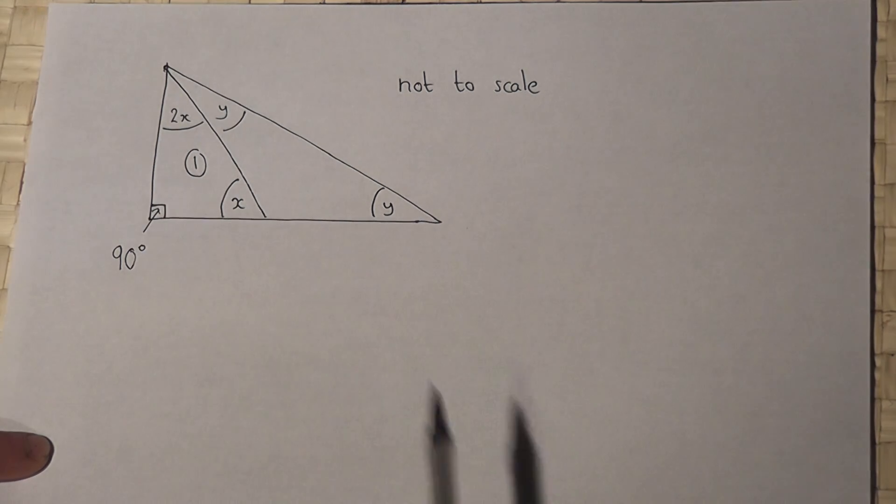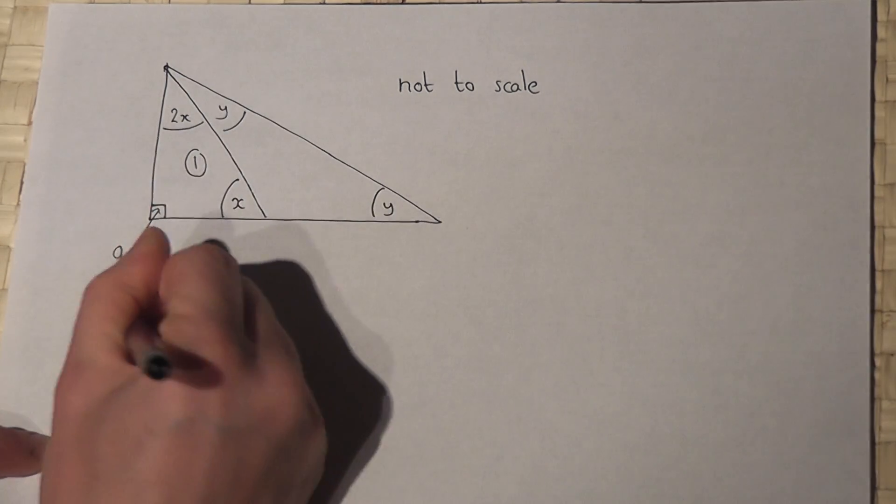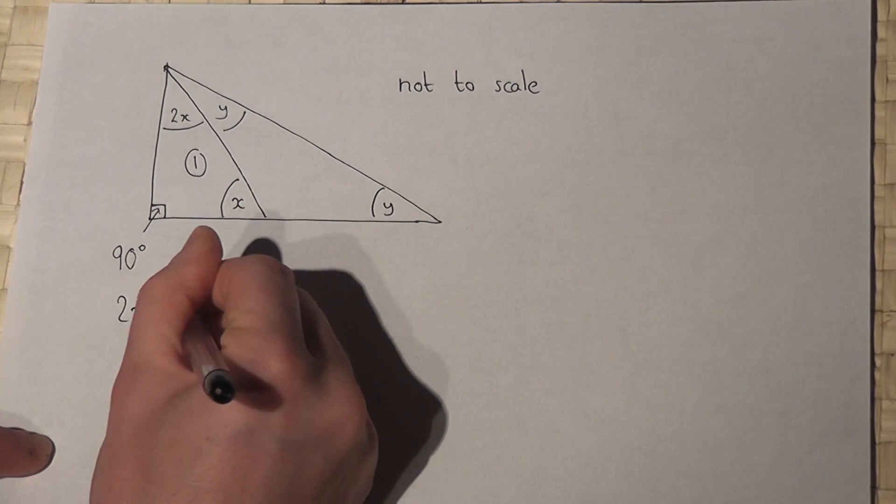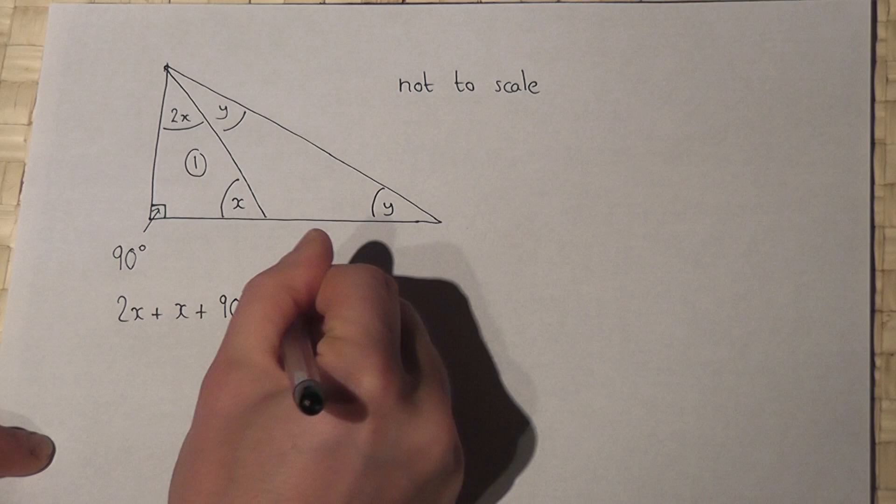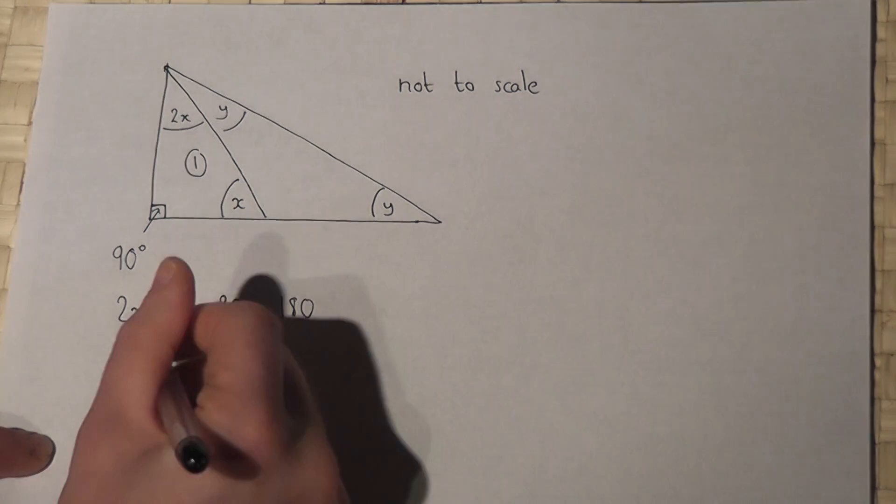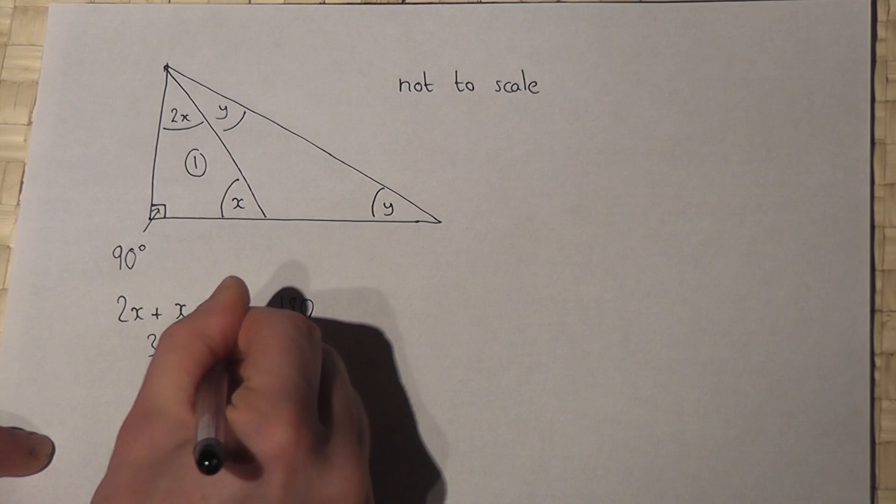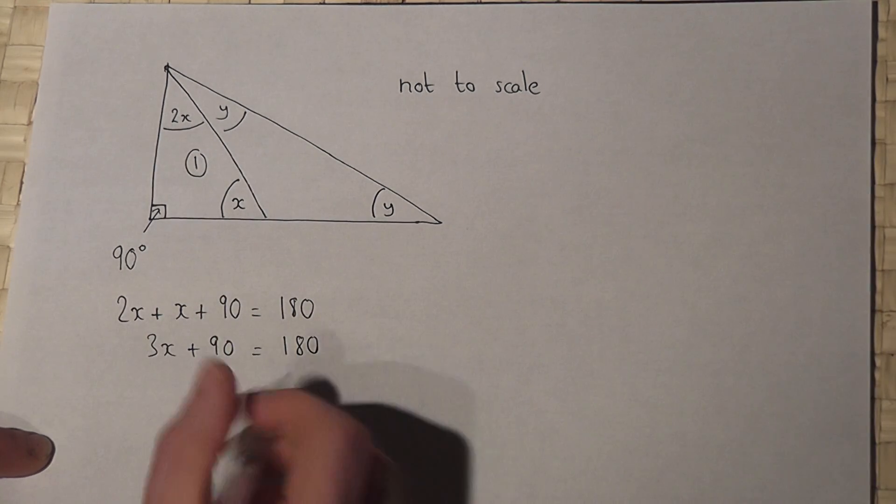Because the sum of angles in a triangle adds to 180, I can write down that 2x plus x plus 90 must equal 180. 2x plus x is 3x plus 90 equals 180.